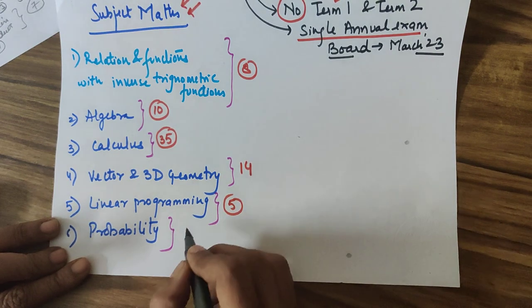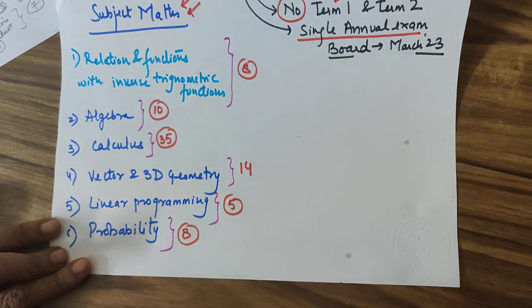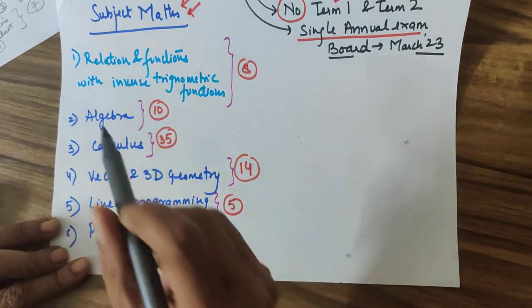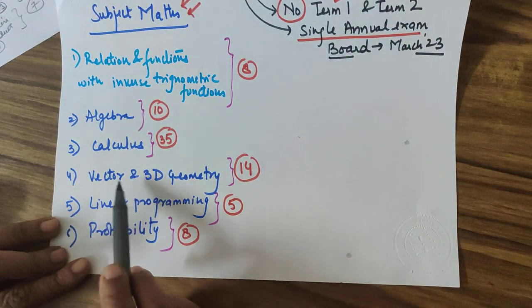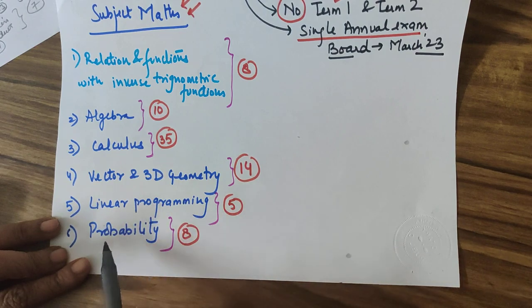And lastly you have probability which has a weightage of 8 marks. So your total weightage of 80 marks is for these units of relation function, algebra, calculus, vector 3D geometry, linear programming and probability.